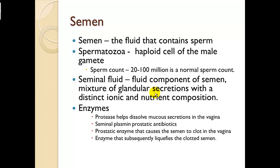Semen is the fluid that contains sperm. Spermatozoa are haploid cells — 23 pairs — the male gamete. Normal sperm count is about 20 to 100 million. Seminal fluid is a mixture of glandular secretions with a distinctive ionic and nutrient composition. Semen also contains enzymes: protease helps dissolve mucus secretions in the vagina; seminal plasmin provides antibiotic properties; a prostatic enzyme causes semen to clot in the vagina via fibrinogen; and additional enzymes subsequently liquefy the clotted semen.